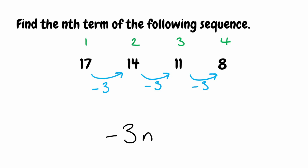To figure out the final bit, we need term number 0 — what would come before 17? We know term to term we're taking away 3 each time. So term number 0 is something take away 3 that gives us 17. We do the opposite: 17 add 3 gives us 20. So 20 is the value for term number 0, and that goes at the end of our nth term. Because it's positive 20, we put plus 20. The nth term for this final sequence is −3n + 20.